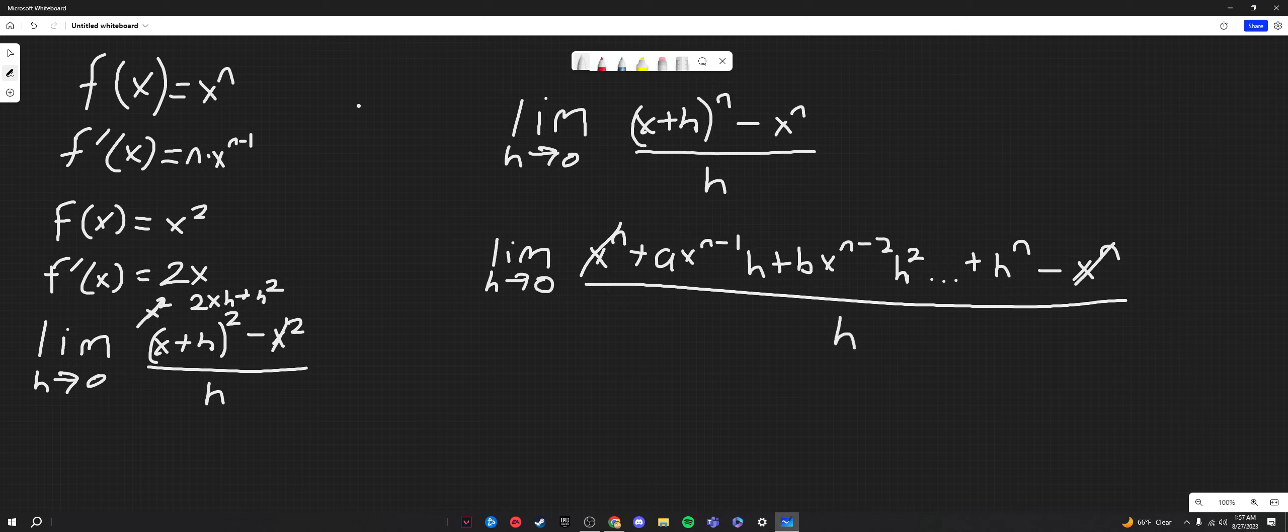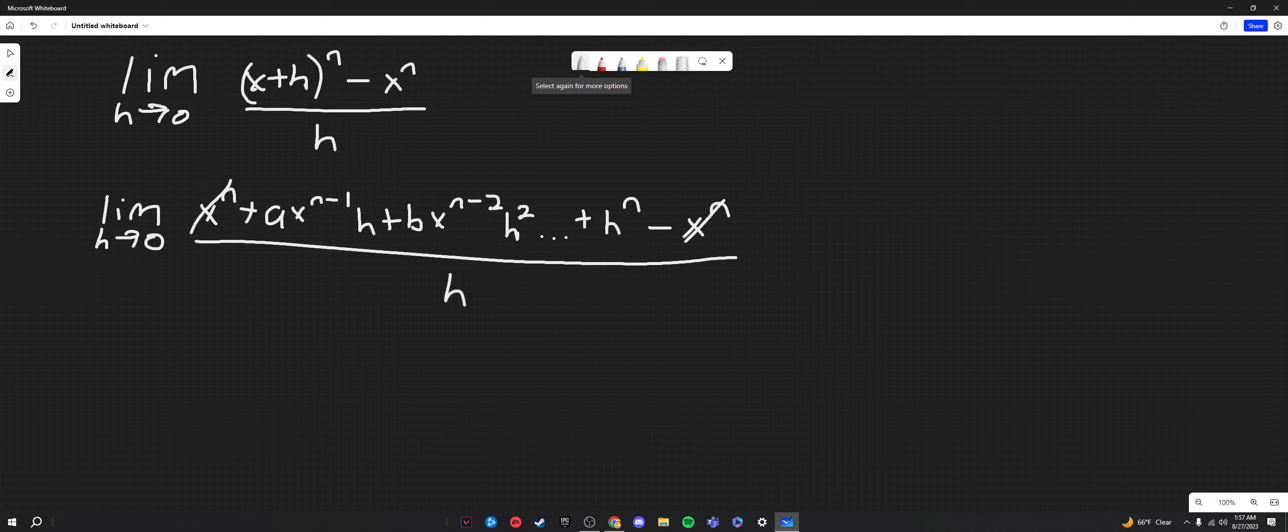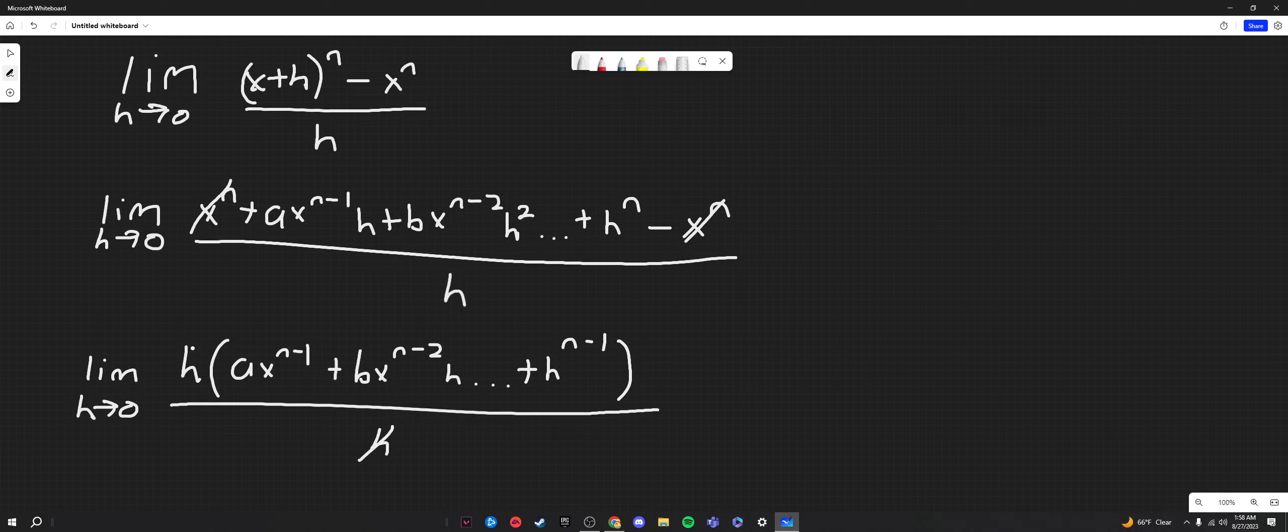Now once again, these terms cancel. So since these two cancel, we're left with just this part here, the a times x to the n minus 1 times h, plus bx to the n minus 2 times h squared, on and on until h to the n. So once again, we're going to factor an h out. So we'll have the limit as h goes to 0. This time we'll have the h out here. And it'll be a times x to the n minus 1, plus b times x to the n minus 2 times h, on and on, until we get to the h to the n minus 1. This will all be over our denominator of h, which cancels out with our numerator.